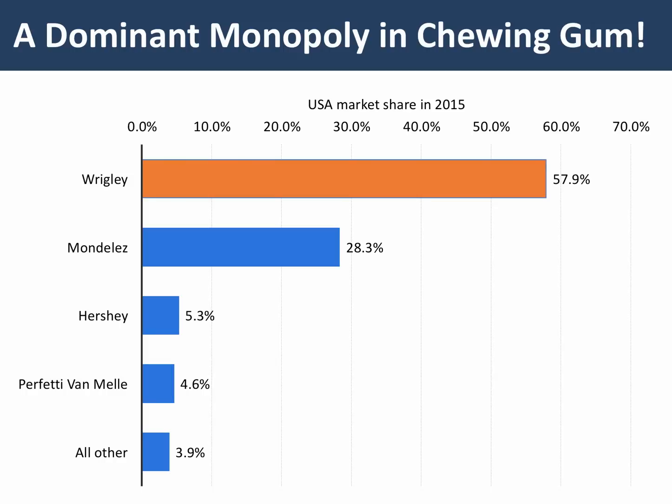Here's an example of a dominant monopoly. Wrigley's in the United States have nearly 60% of the market for chewing gum. They clearly have a very dominant, well-established monopoly position.